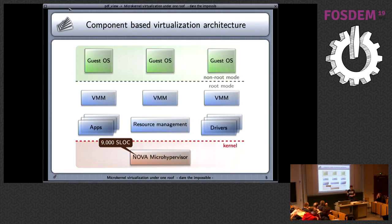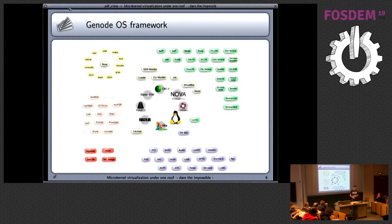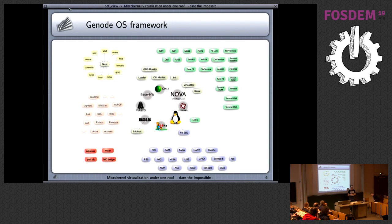The nice thing in such an architecture is that you can have multiple virtual machine monitors — not the same implementation. They can be specific to your guest operating system if you want to optimize for low code footprint or for security reasons. So you have some flexibility. From this picture you see that we need a microkernel, a user-level environment, and virtual machine monitors. The Genode operating system framework is such a user-level environment.